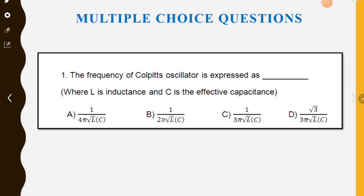The frequency of a Colpitts oscillator is expressed as: Option A is 1 by 4π√(LC), Option B is 1 by 2π√(LC), Option C is 1 by 3π√(LC), Option D is √3 by 3π√(LC). Here L is the inductance and C is the effective capacitance.